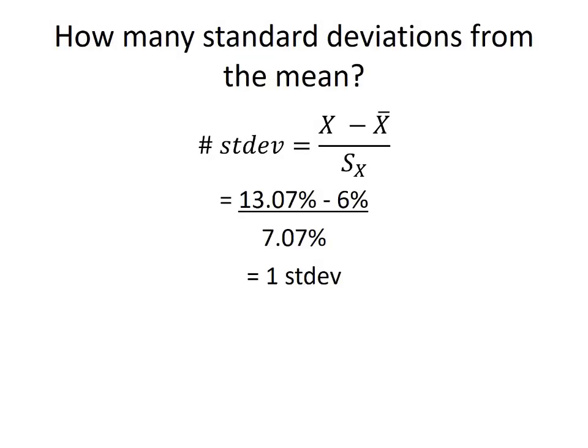Now that we know the mean and sample standard deviation for our distribution, we can find out how many standard deviations 13.07% is away from the mean. We use the formula: the return in question — in this case 13.07% — minus X-bar. Anytime you see a bar over a variable, it denotes the mean or average. In this case, that is 6% as we got from our TI BA2+. We divide that difference by the sample standard deviation of 7.07%. The top and bottom are both 7.07%, so we're looking at exactly one standard deviation above the mean.